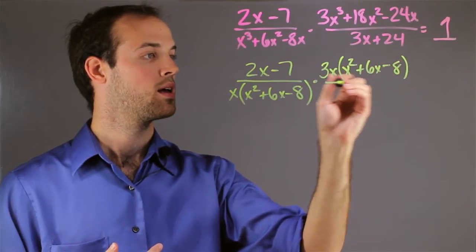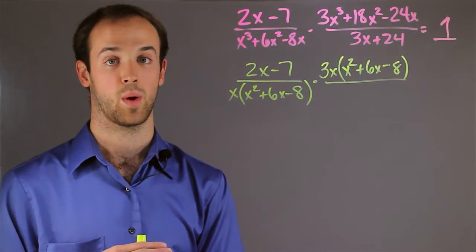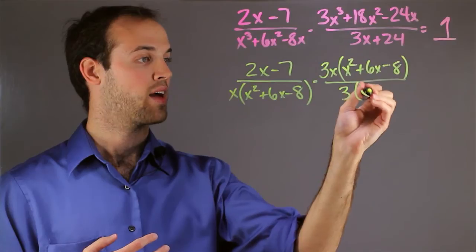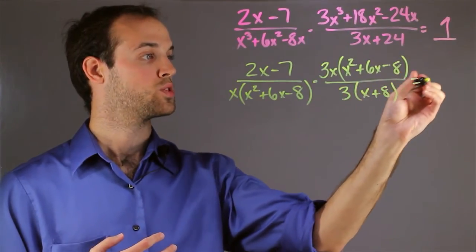And down here I only have a 3x in common, so I can go ahead and pull that out as well. And on the inside I have x plus 8 is equal to 1.